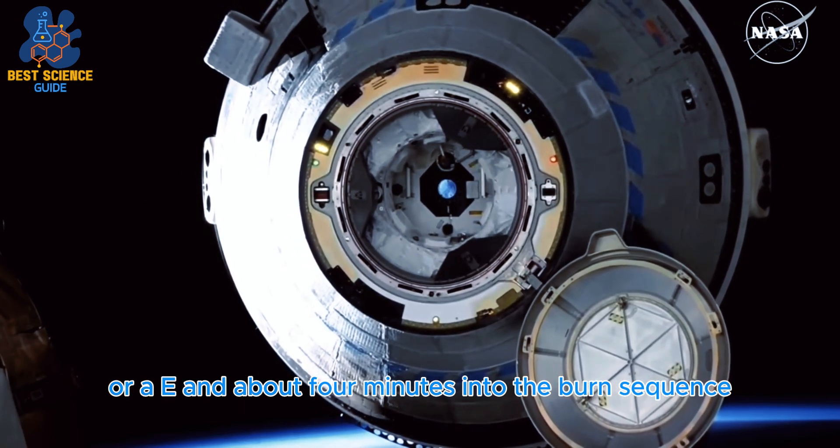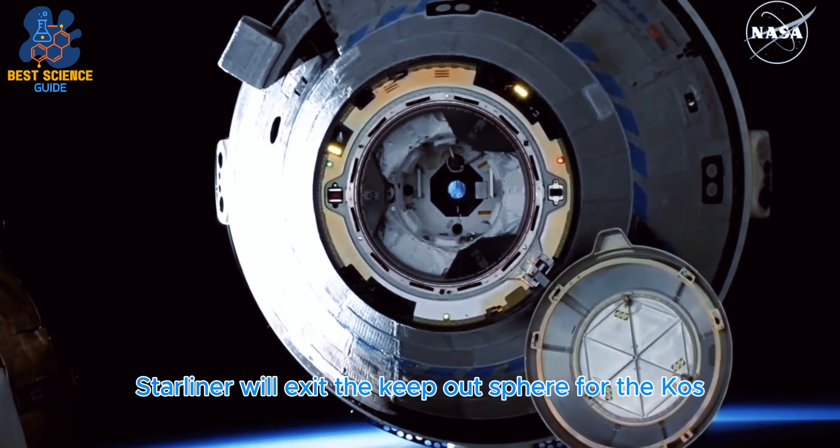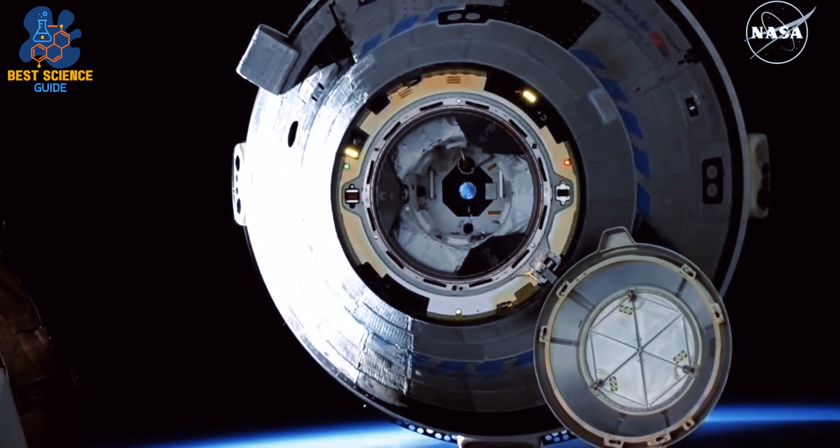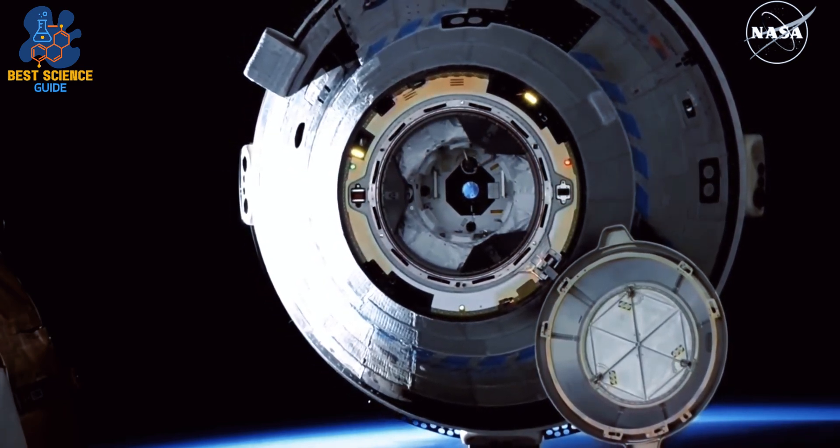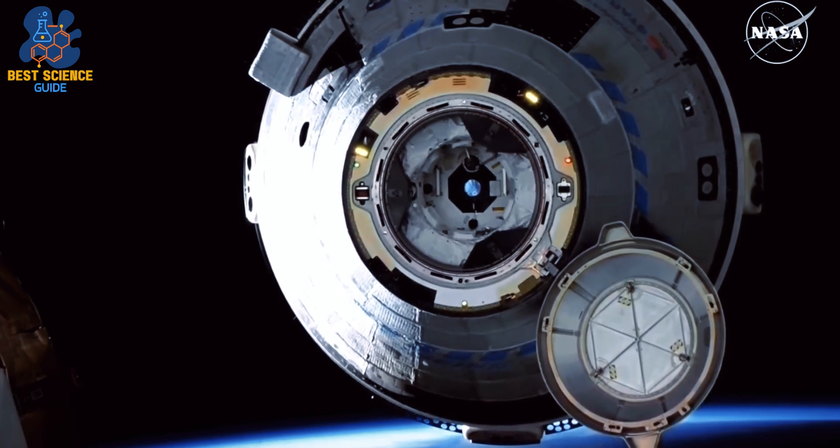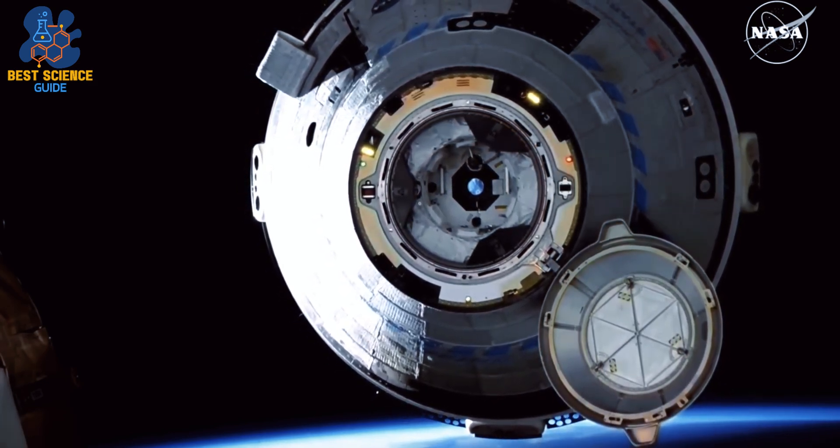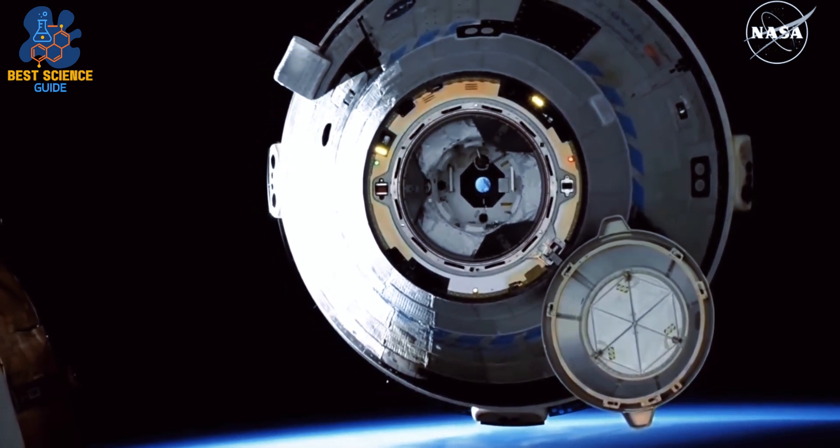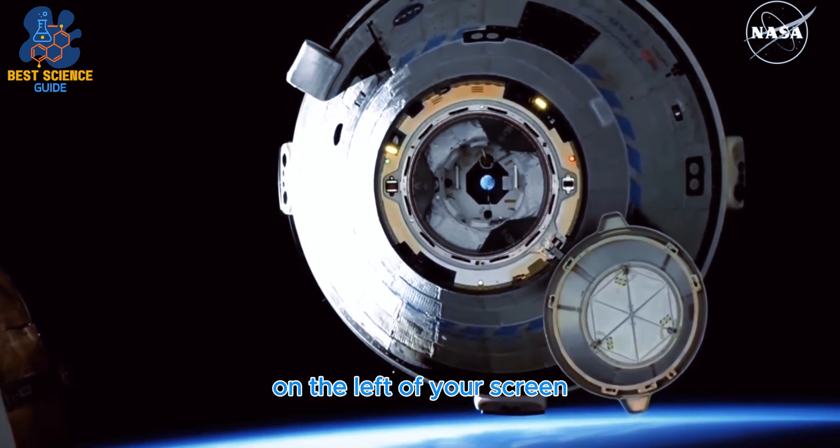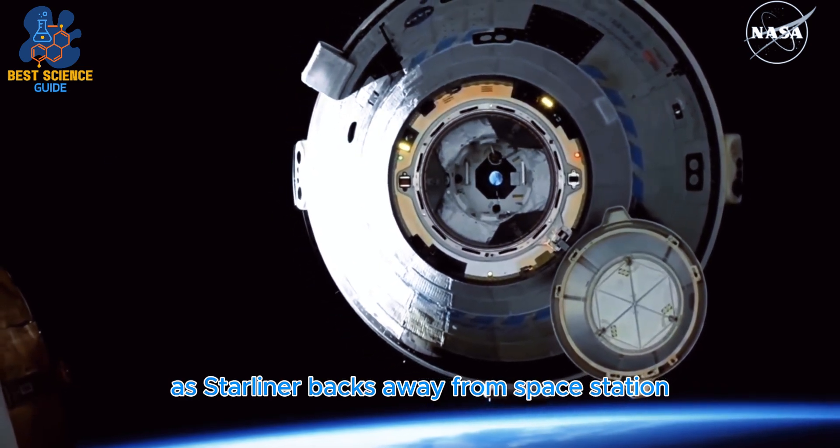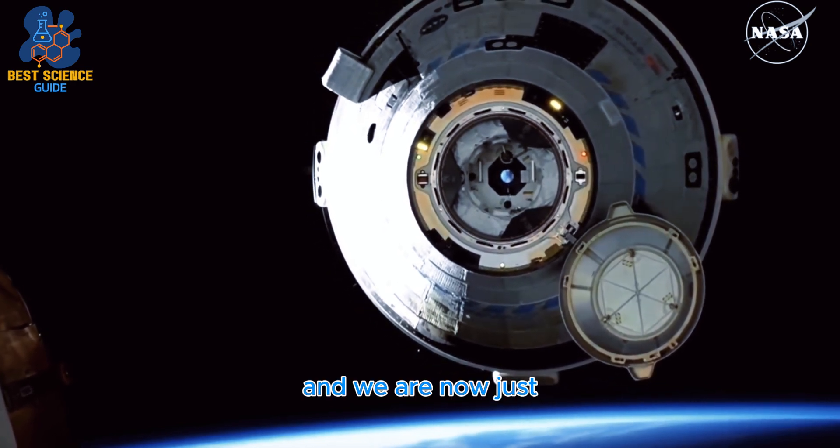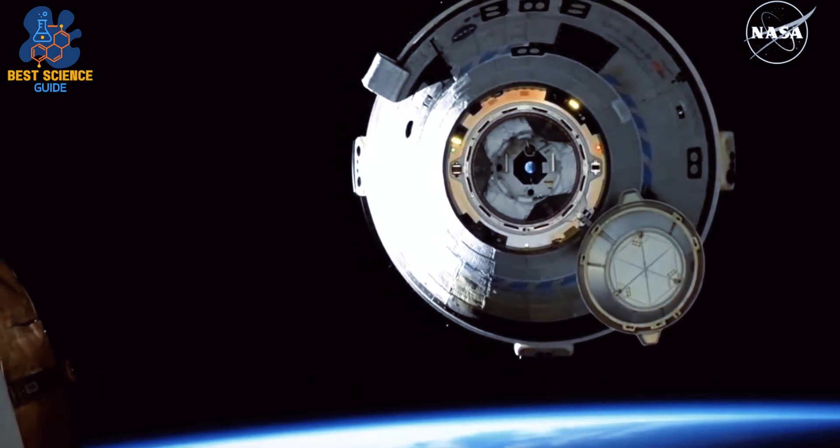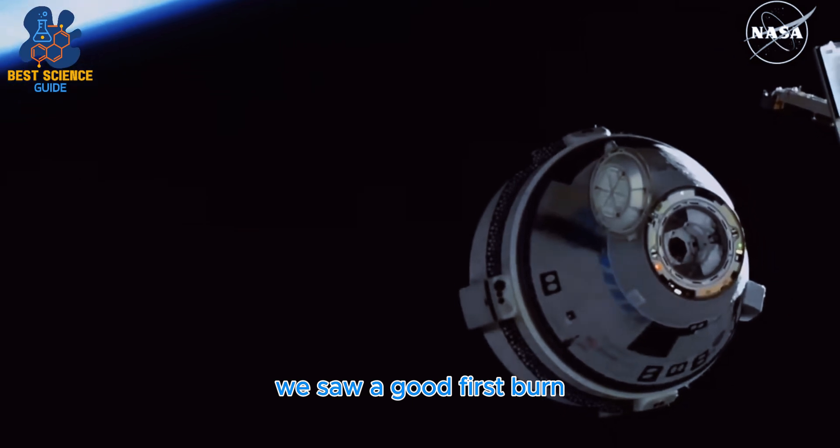About four minutes into the burn sequence, Starliner will exit the keep-out sphere or the KOS. You can see those thrusters firing there on the left of your screen as Starliner backs away from space station. We are now just at 35 meters away from the International Space Station. We saw a good first burn.